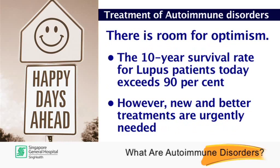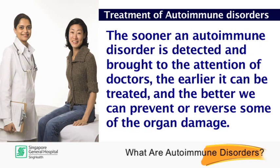There is room for optimism. The 10-year survival rate for lupus patients today, for example, exceeds 90%. However, new and better treatments are urgently needed. The sooner an autoimmune disorder is detected and brought to the attention of doctors, the earlier it can be treated, and the better we can prevent or reverse some of the organ damage.